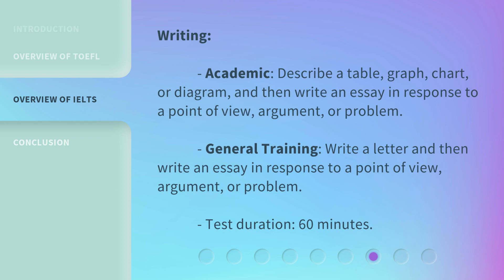Writing. Academic: Describe a table, graph, chart, or diagram, and then write an essay in response to a point of view, argument, or problem. General Training: Write a letter, and then write an essay in response to a point of view, argument, or problem. Test Duration: 60 minutes.